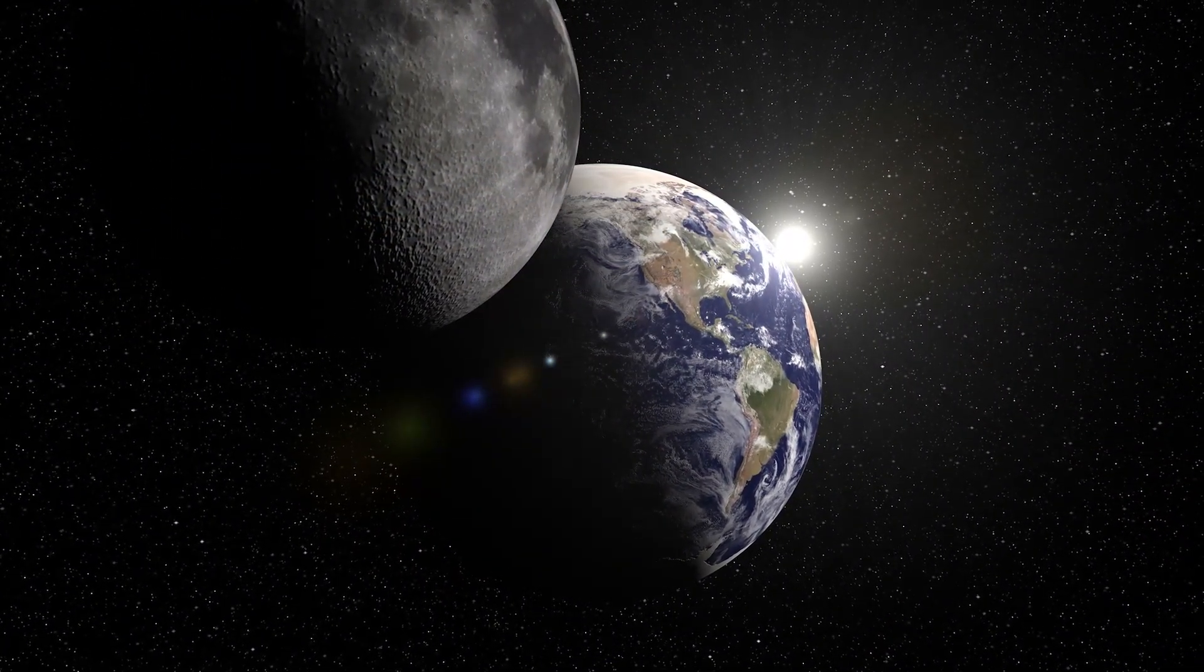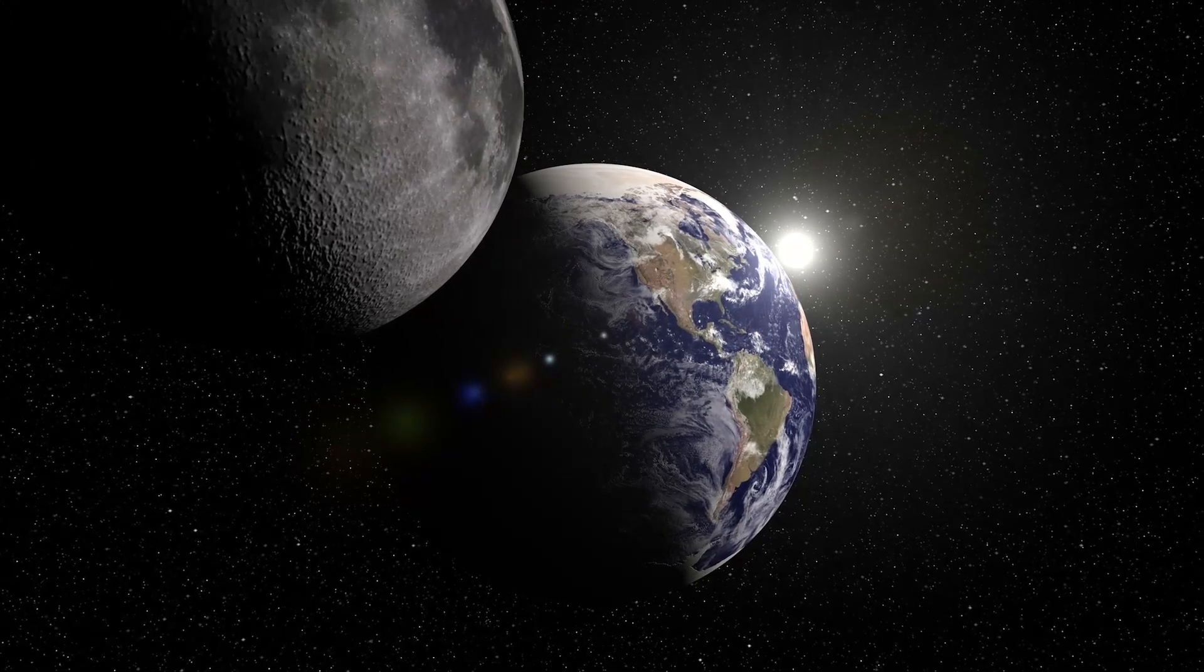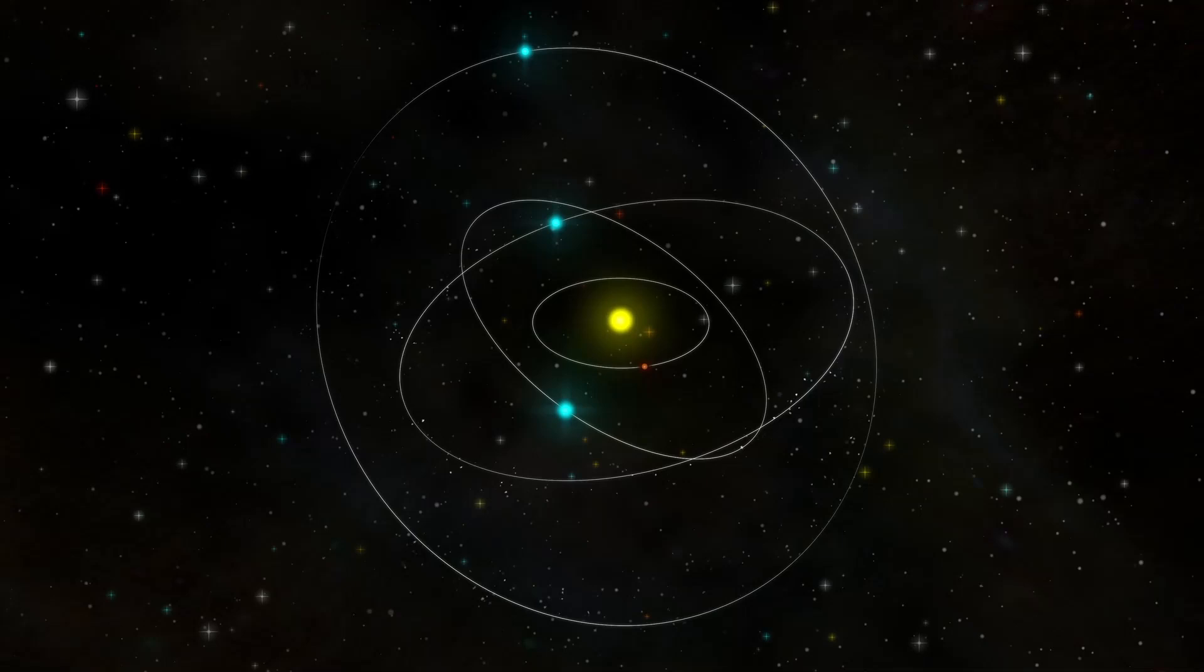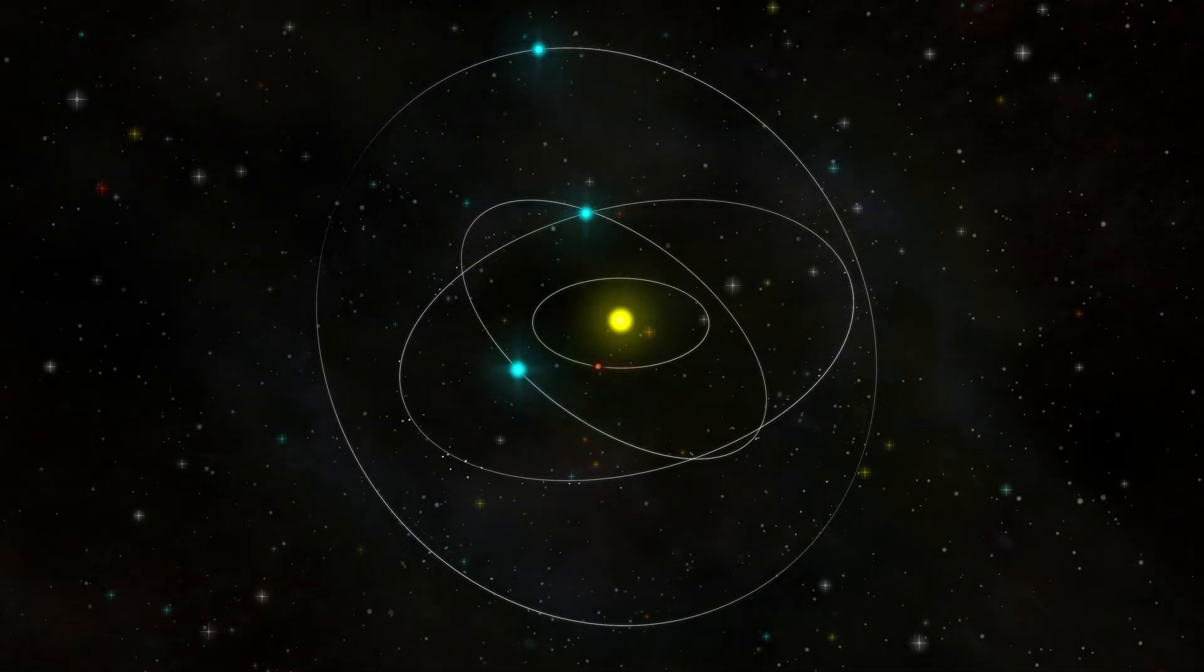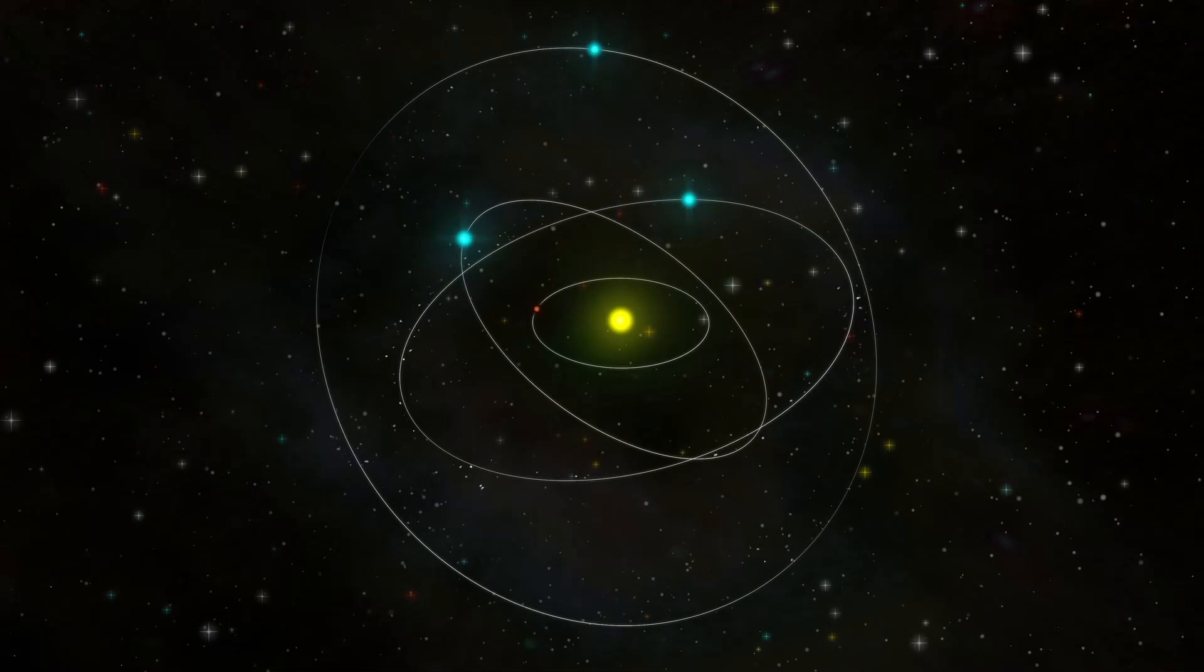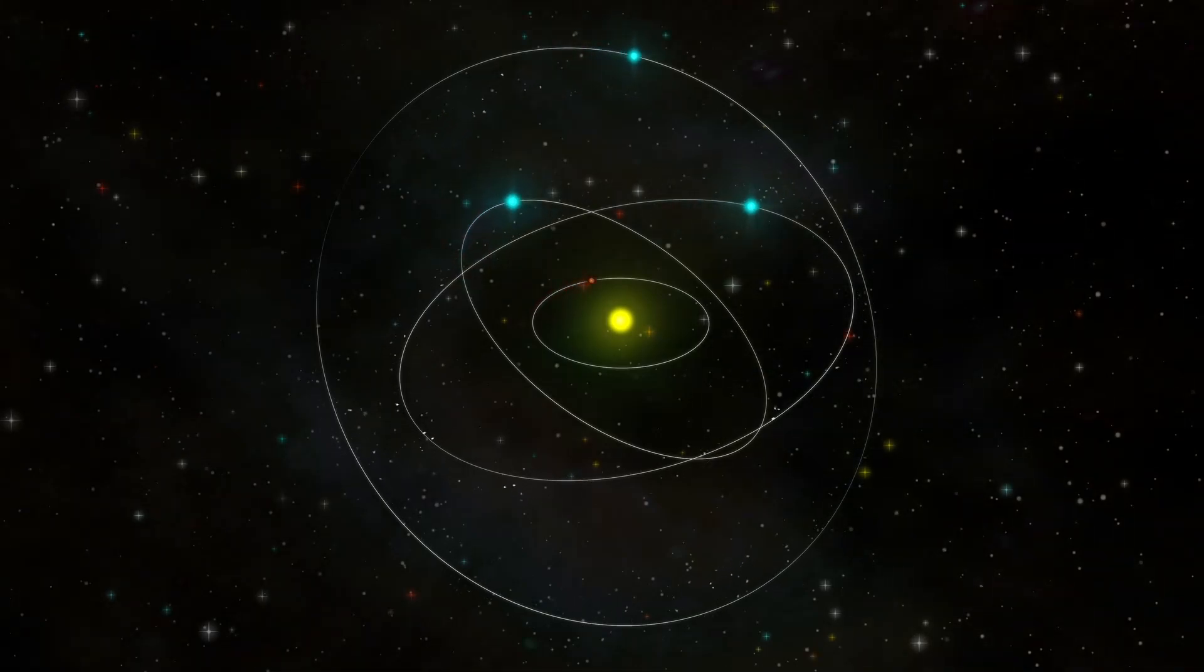The Moon is the Earth's closest and largest neighbor in space, and it exerts a strong gravitational pull on the Earth. This pull causes the Earth to bulge slightly on the sides facing and opposite to the Moon, creating the tides. The tides are not only visible in the oceans, but also in the land and the atmosphere.